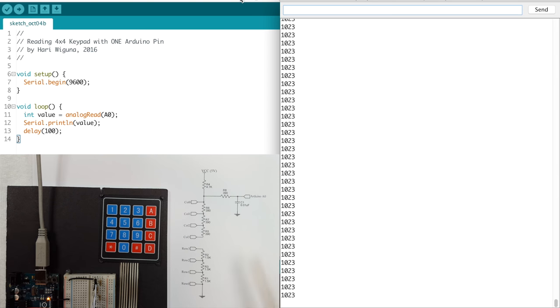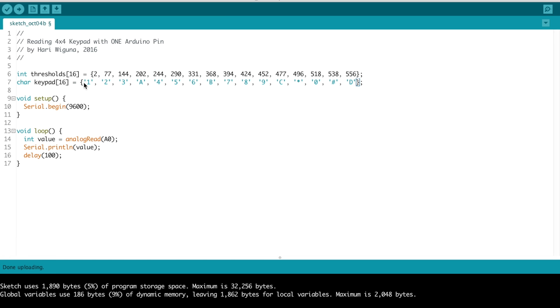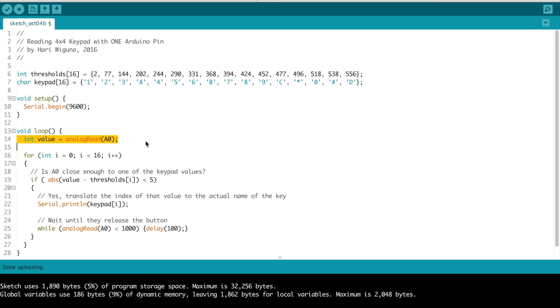So for each of the buttons we will get a different value over here let's write all that down. So these are the values we saw earlier one for each button and these are the actual keys represented by those analog values. We still read the analog value as before but this time we're going to scan through all our threshold values comparing them to that value. As you saw the value fluctuates a little bit like this first one was like one or two. That's why we can't simply say if the value is equal to that threshold. Instead we have a little slop here.